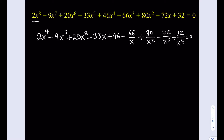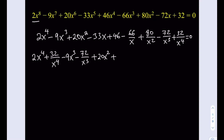Now even at this point the equation may not make sense, but we're going to start doing something interesting, which is pairing up the terms. We're going to take the first and last term and put them together. Then the second term with the second from the last, which is 72 over x cubed. Then I'll pair up 20x squared with 80 over x squared, and I'll pair up negative 33x with negative 66 over x. We were able to write all the terms, and we got to 46 — that's by itself because there's no matching term, and that's going to be our constant.